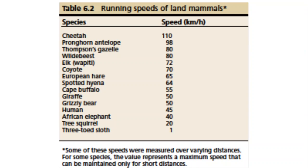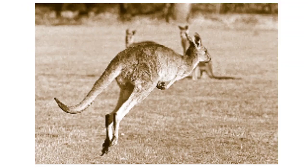One consequence of that vertebral column regionalization, increased sacral vertebrae, and upright posture is the running speeds they're capable of achieving. Cheetahs can easily reach 110 kilometers per hour; pronghorn antelope aren't far behind. Three-toed sloths are at the bottom at one kilometer per hour, but they don't spend much time on the ground — most of their time is spent hanging. We'll talk about some quirks of three-toed sloths when we get to the Xenarthrans.